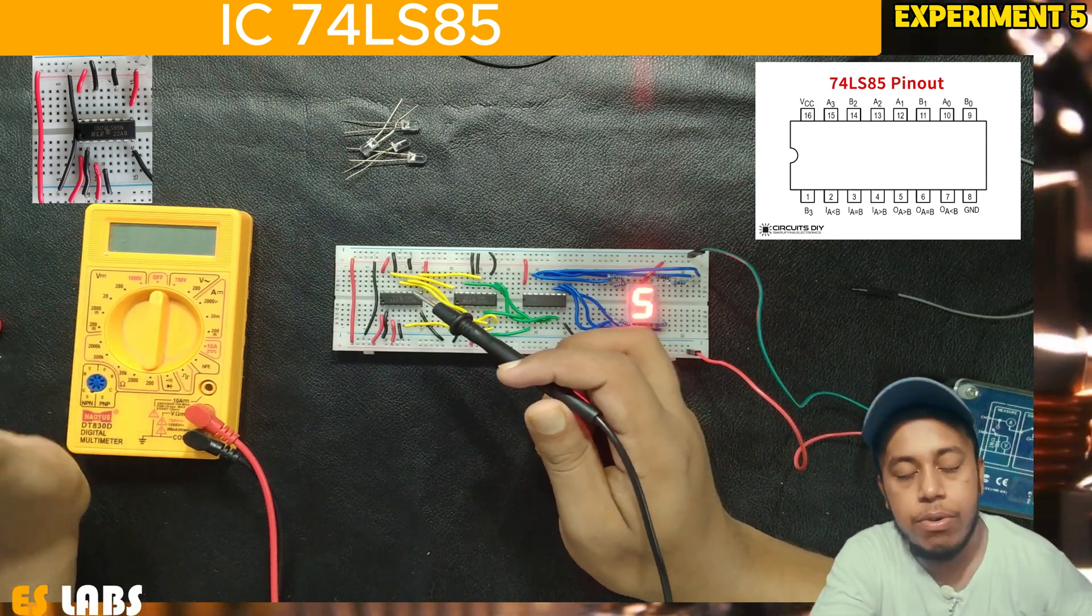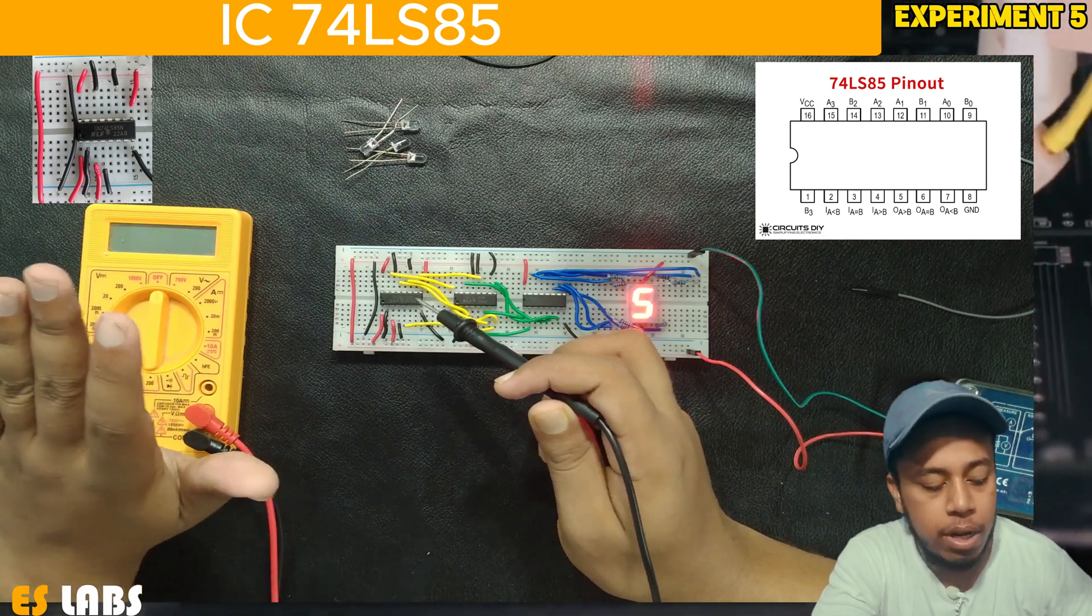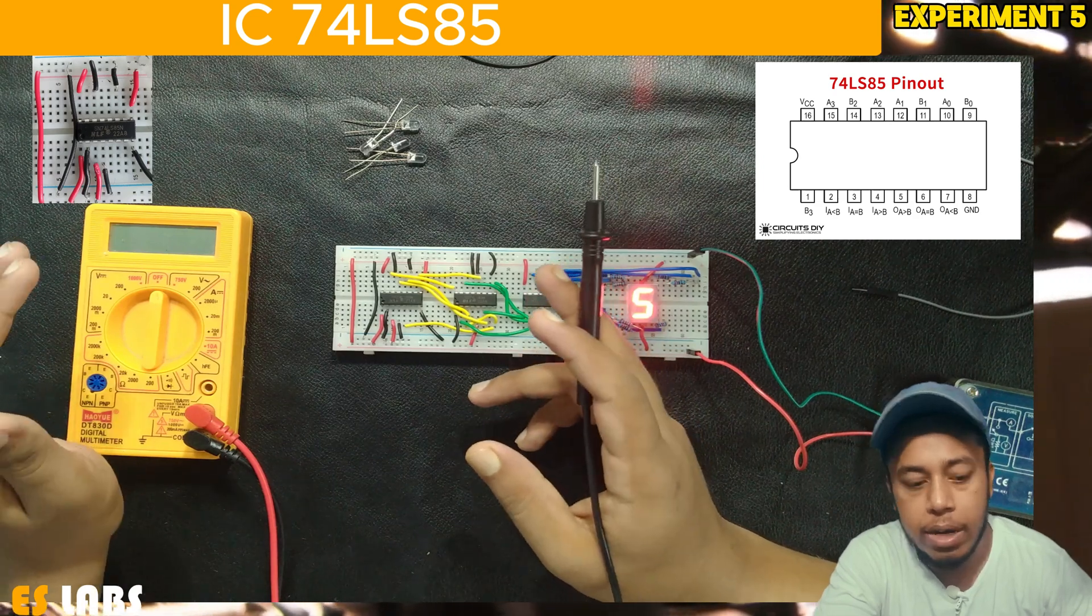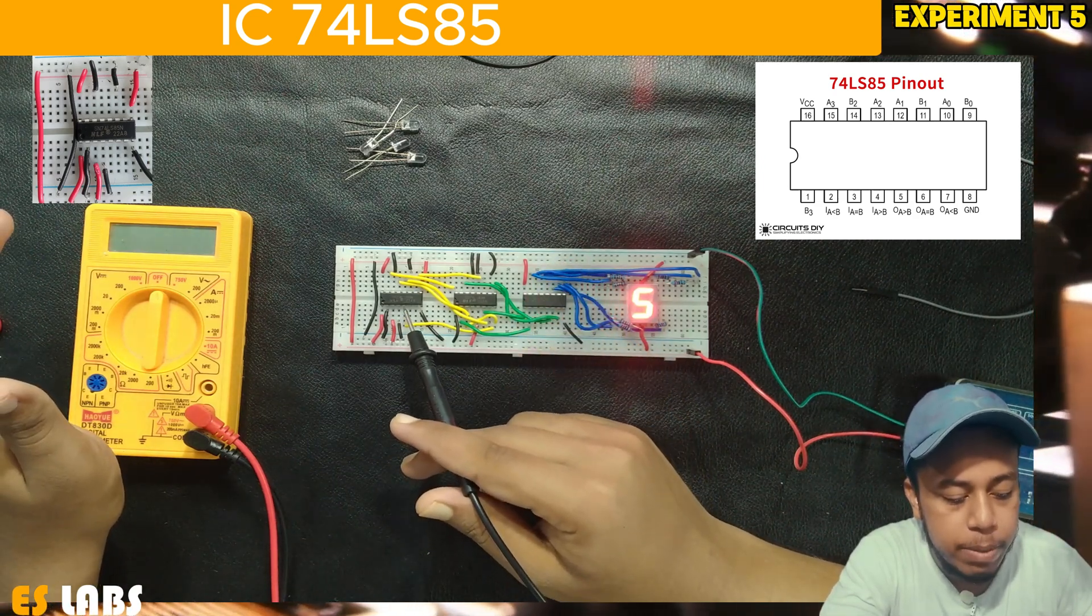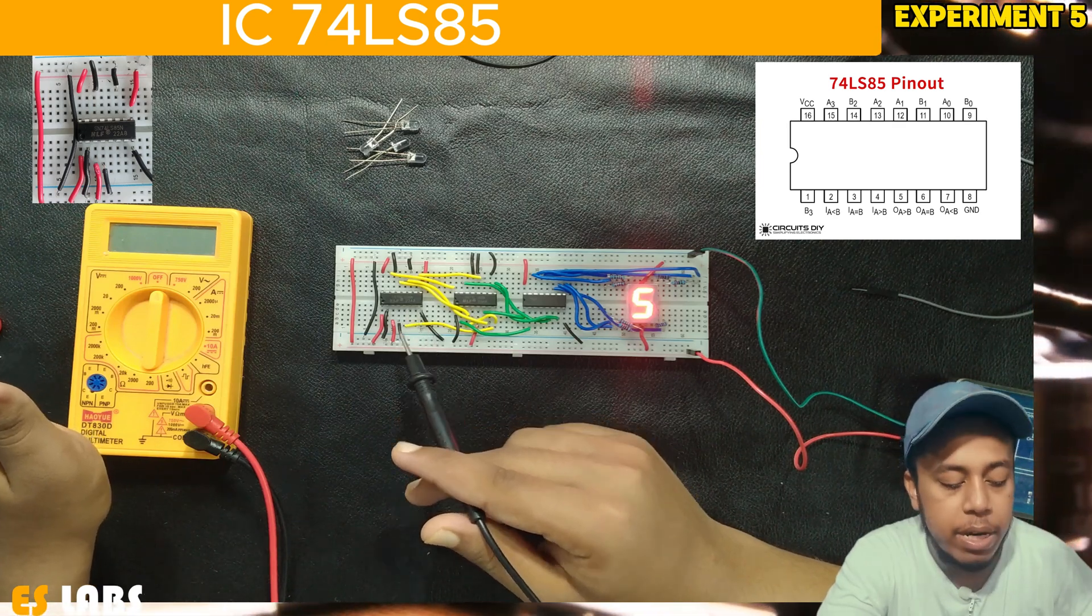It takes two input from A3 to A0 and B3 to B0, compares A with B and displays the output whether A is greater than B at pin 5, A equal to B at pin 6, and A less than B at pin 7.